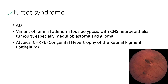Next is Turcot syndrome. It is an autosomal dominant condition and a variant of familial adenomatous polyposis with CNS neuroepithelial tumors, especially medulloblastoma and glioma. The fundus can show atypical congenital hypertrophy of the retinal pigment epithelium.